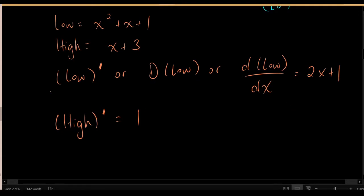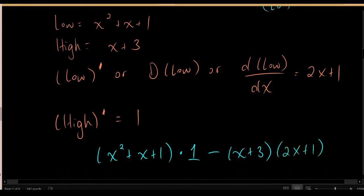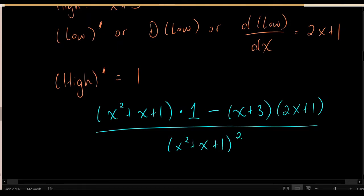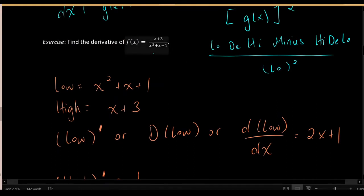Now let's construct the derivative using the quotient rule. We have low d high: x squared plus x plus 1, times the derivative of the top function, which is 1. Minus high d low: the top function x plus 3, times the derivative of the bottom, which is 2x plus 1. All over the bottom function squared, which is x squared plus x plus 1, quantity squared. This would be the derivative of the given function.